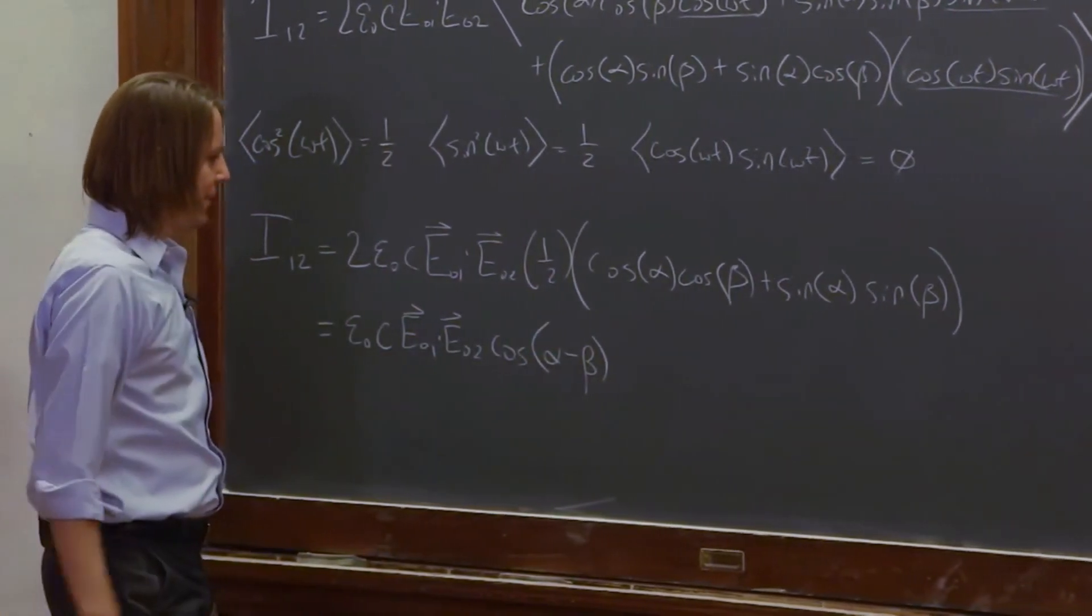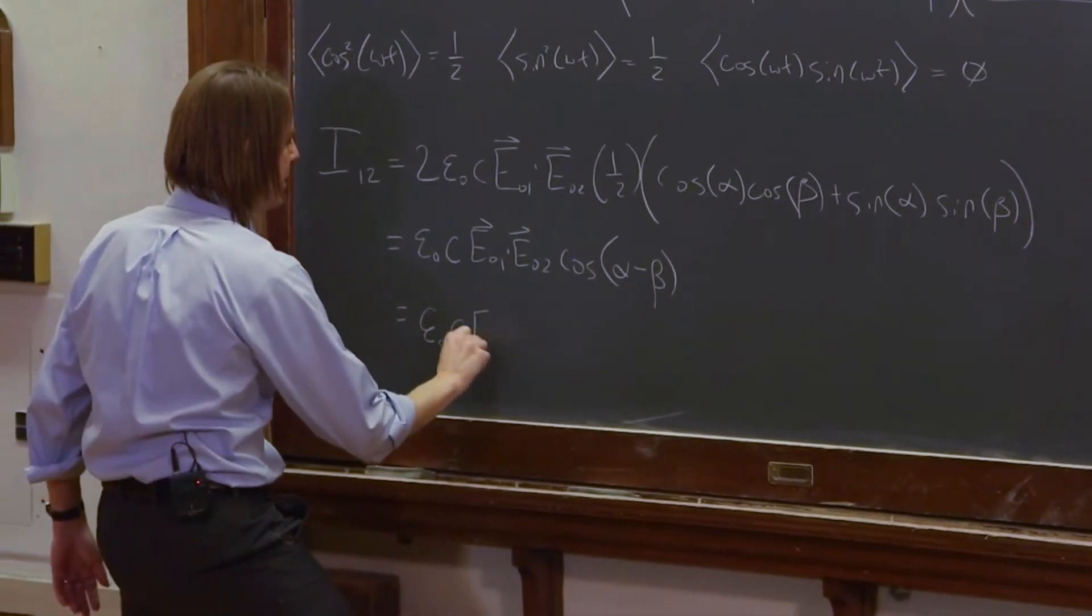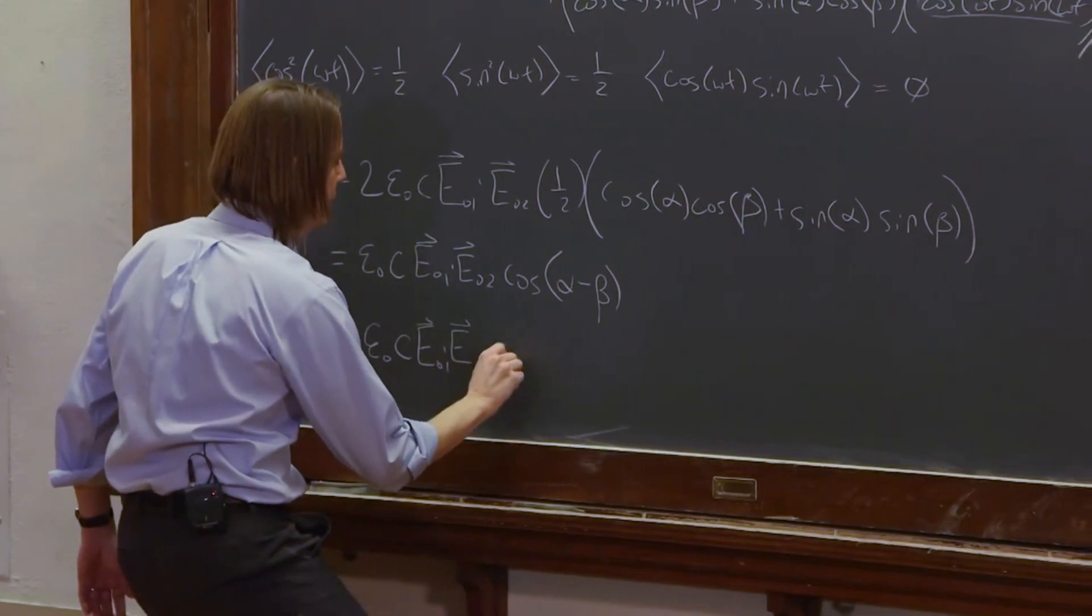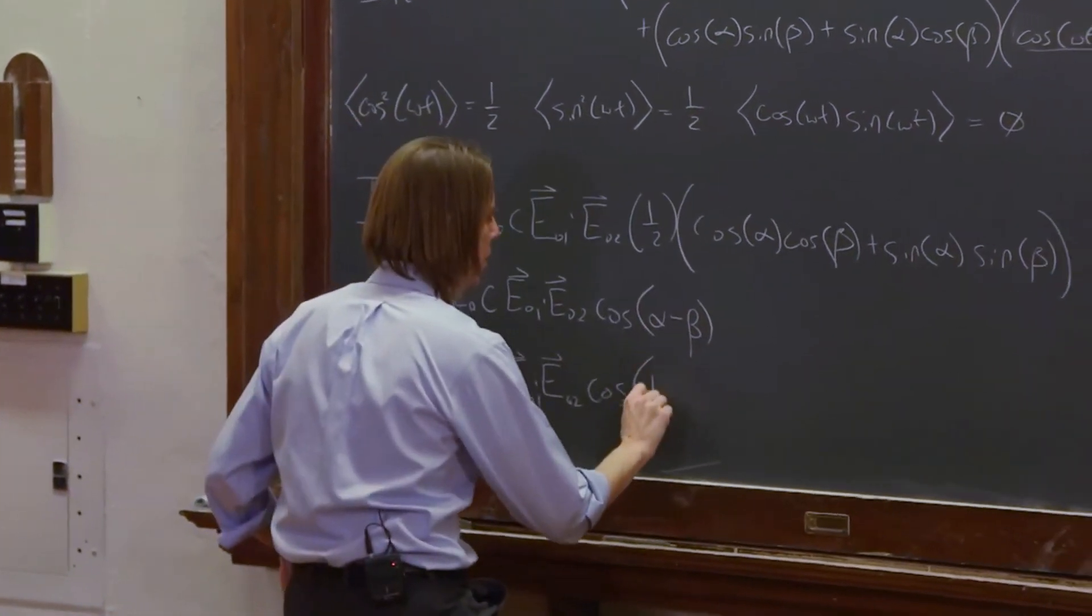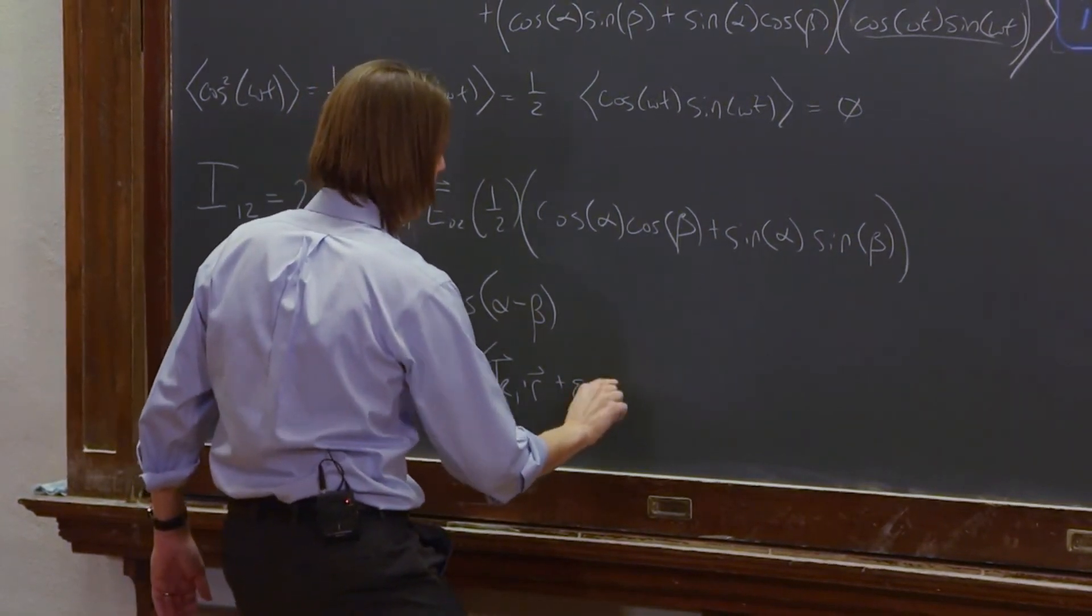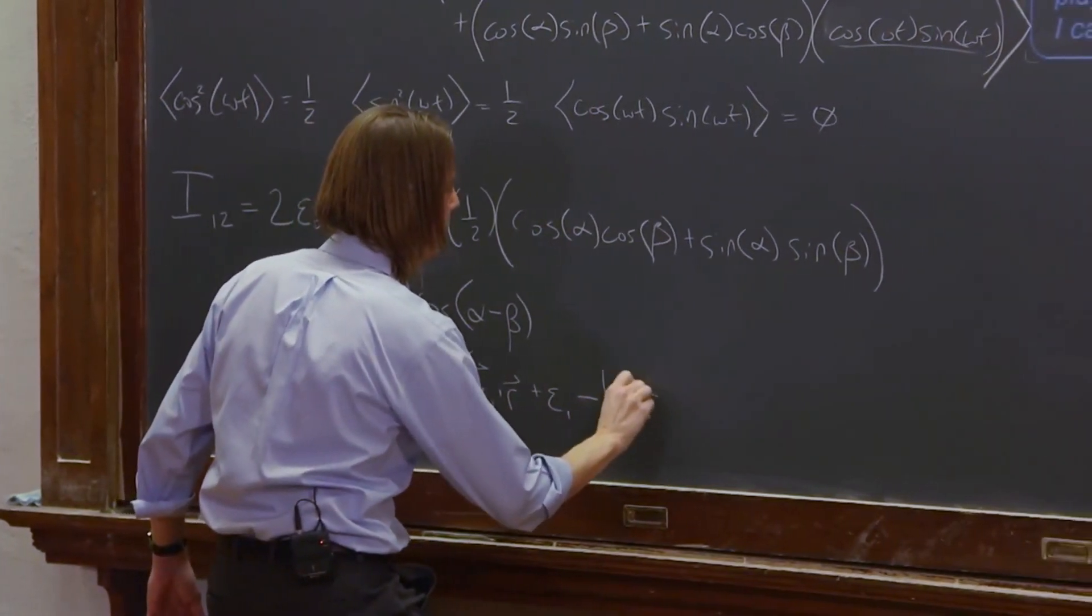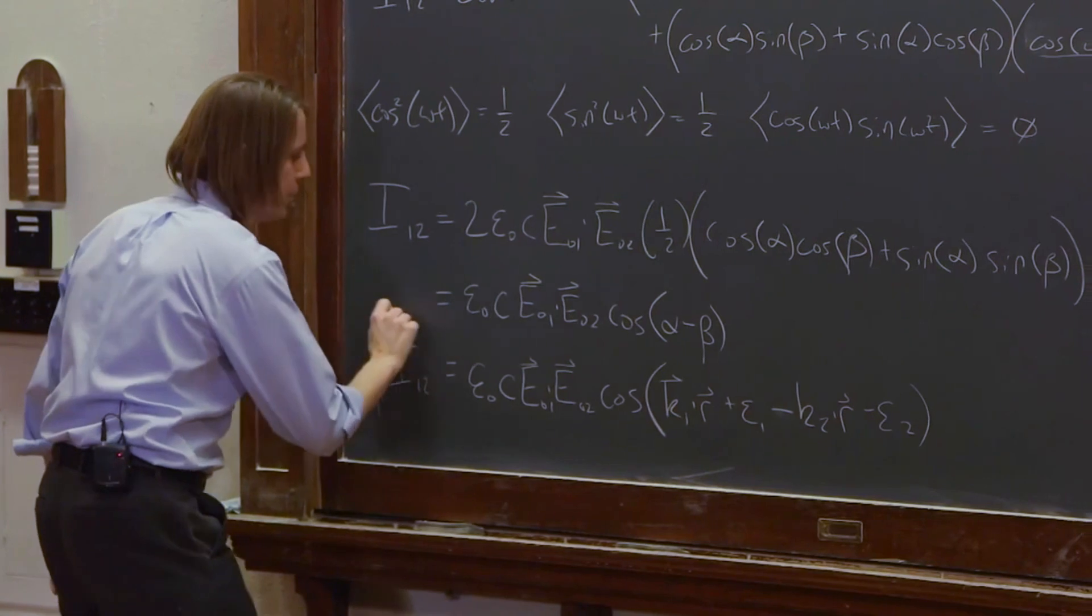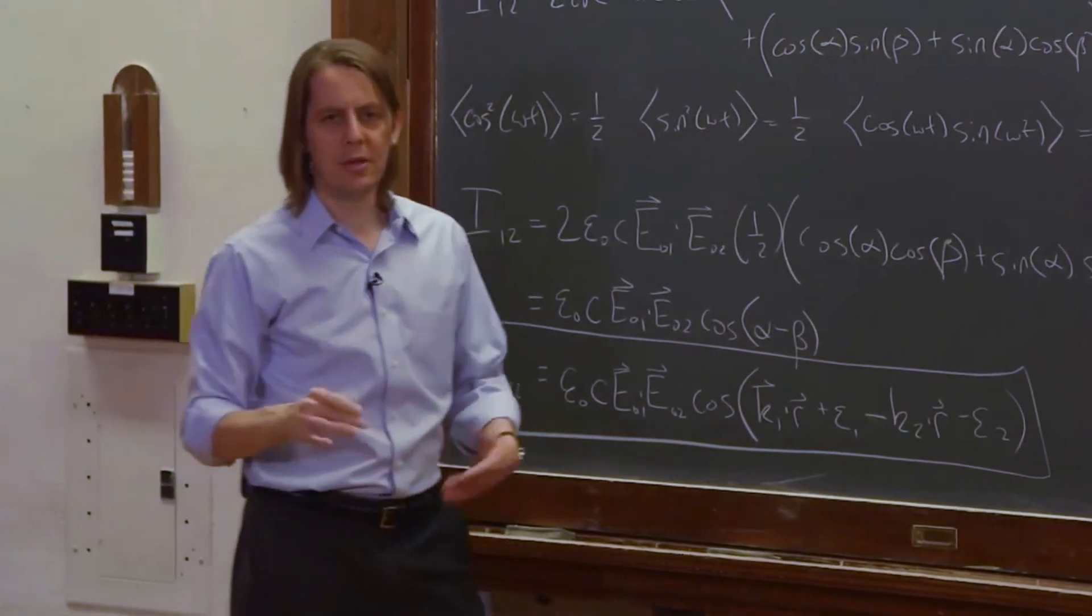And now that we have it down to just a single little alpha and beta, we can actually write it in terms of the original properties given ε₀c, the two amplitude vectors dotted with each other. And then the cosine of, this was K₁ dot R plus ε₁ minus K₂ dot R minus ε₂. So this I₁₂ is the term that we now want to study and see how it shows up in different physical situations.